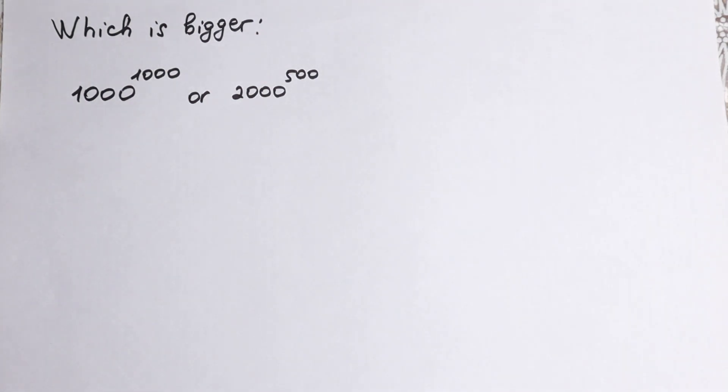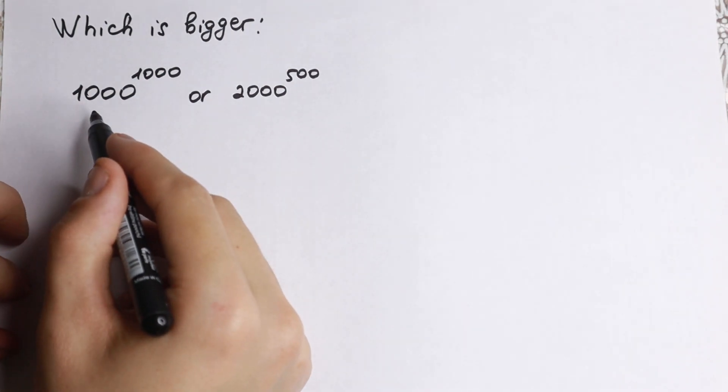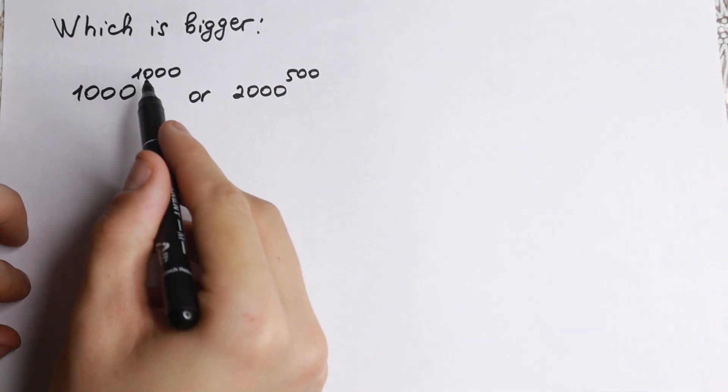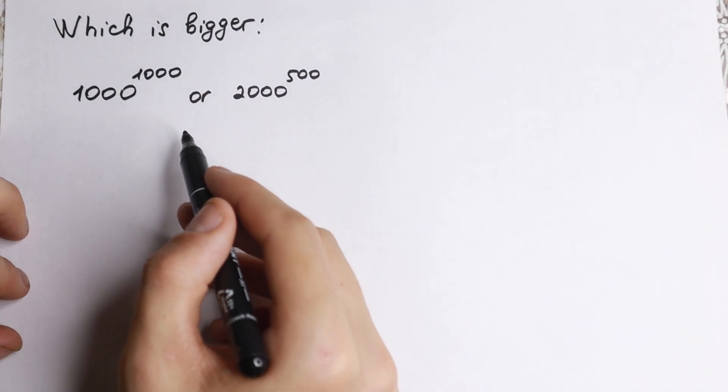Hello my friend, happy to see you here and welcome back to MathMode. Really interesting problem today - which one is bigger? On the left we have 1000 to the power 1000, or 2000 to the power 500? Which one is bigger, on the left or on the right?